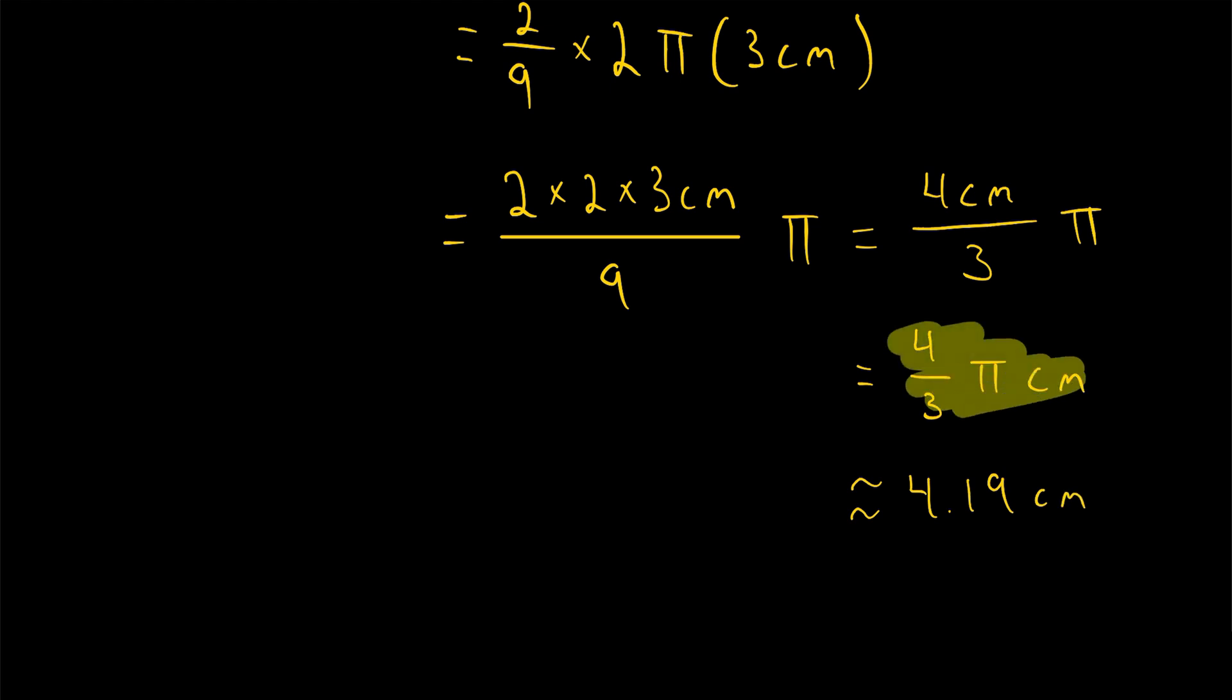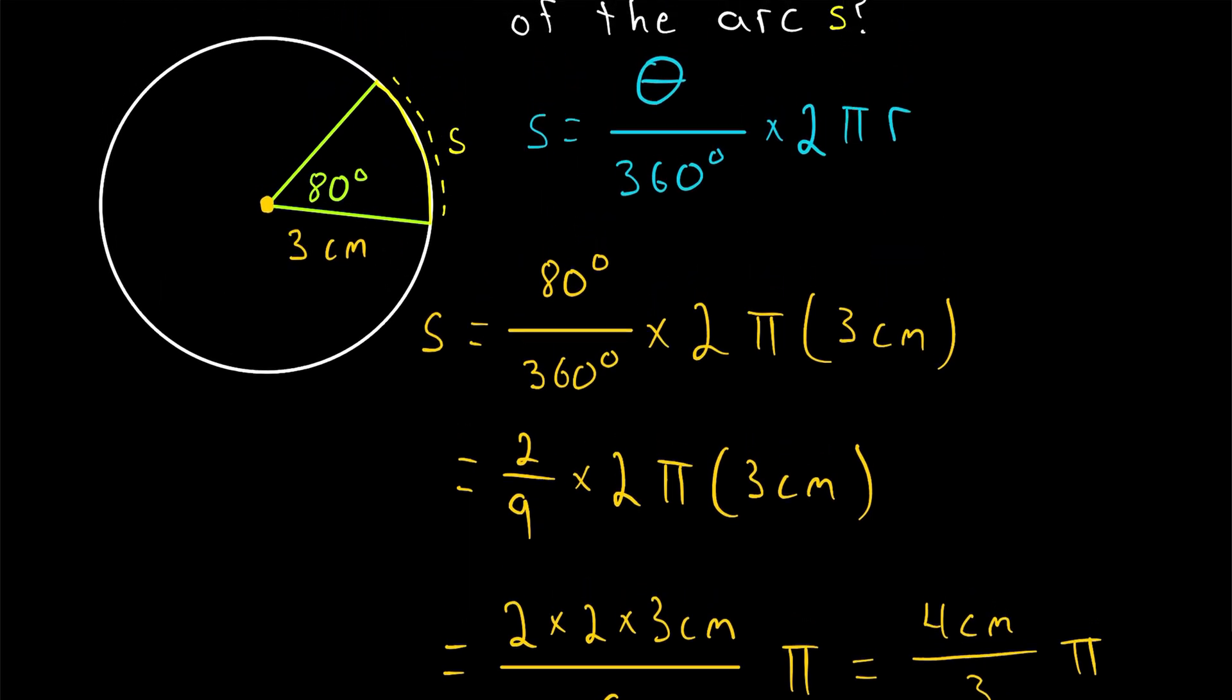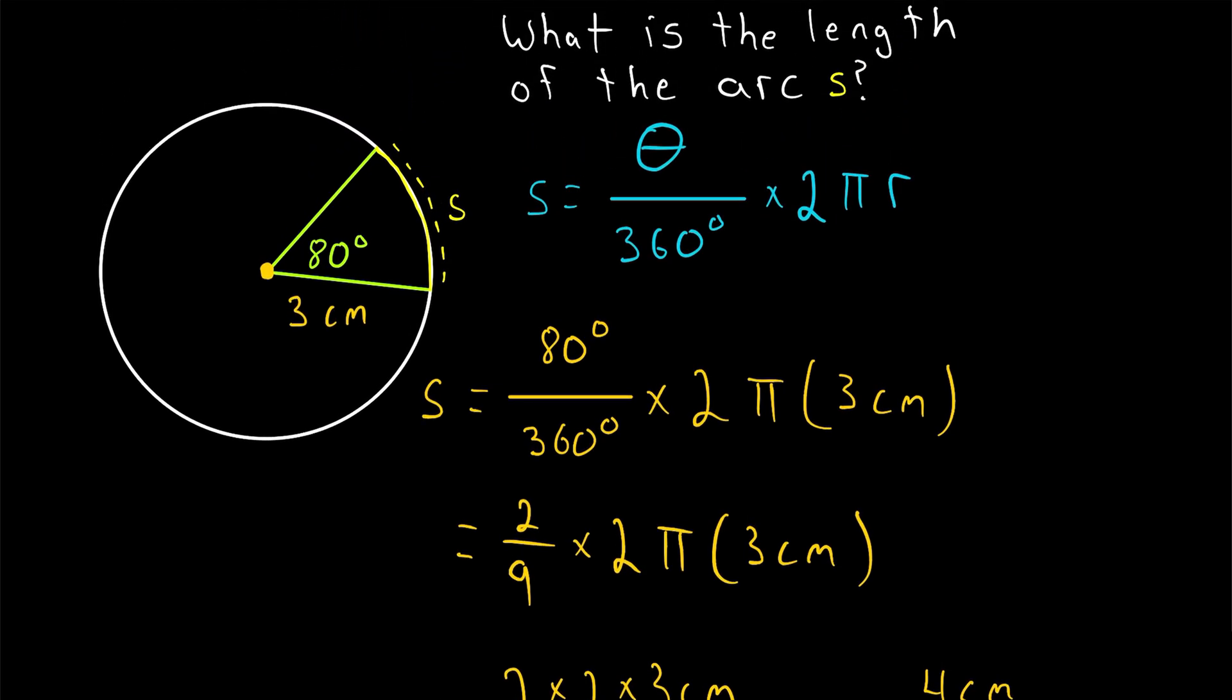And if you were to plug this into a calculator and round to two decimal places, it's approximately 4.19 centimeters. I like to leave things in terms of pi, but it's pretty common that you'll be asked to plug it into a calculator and round to some number of decimal places. So that's all there is to it. Remember the reasoning that we used to arrive at this formula, and I don't think you'll forget it.